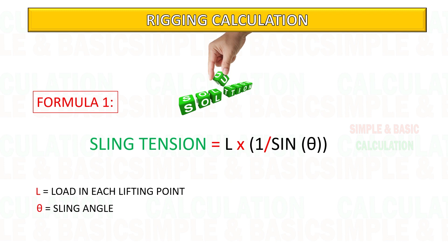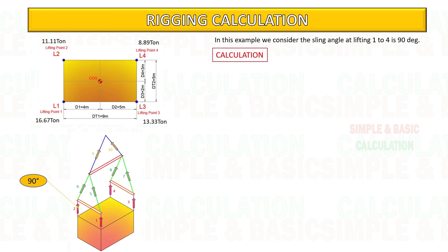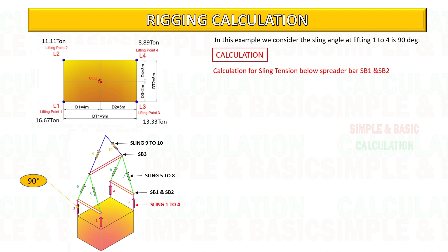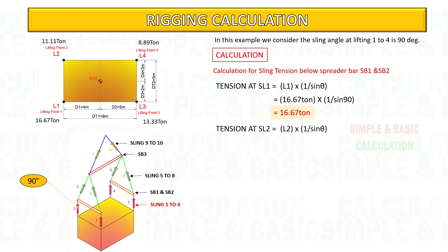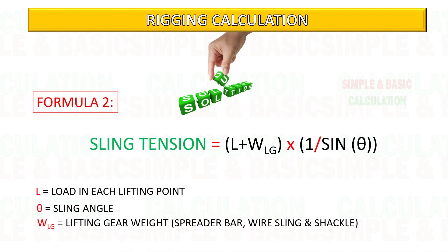This is the formula for calculating the tension. In this example, we consider the sling angle at lifting points number 1 to 4 is 90 degrees. Based on the formula given, you can start to calculate the tension in each sling. See the calculation below — you can pause the video and try to follow the calculation.